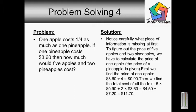And the solution to that is, notice carefully what piece of information is missing at first. To figure out the price of five apples and two pineapples, we have to calculate the price of one apple. The price of a pineapple is given. First find the price of one apple.